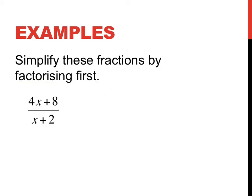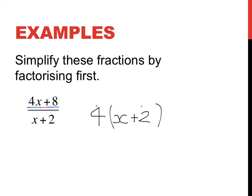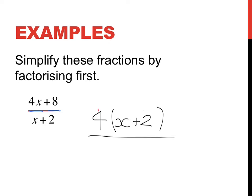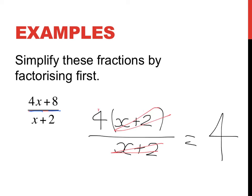This next example is again asking us to factorise first. Let's factorise the top part of our fraction: 4x plus 8. I don't have a pronumeral on both sides, so the highest common factor is just 4. 4 times x gives 4x, and 4 times 2 gives positive 8, so the top factorises to 4(x + 2). The bottom statement, x plus 2, has no common factor to factorise further. Now there's an x plus 2 on the top and an x plus 2 on the bottom, so they cancel each other out, leaving just 4 on the top. So it takes a few steps, but factorising first makes it easy to simplify algebraic fractions.